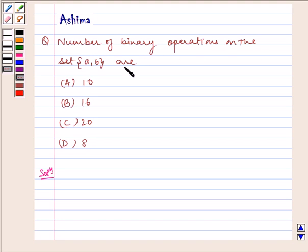The number of binary operations on the set A, B are: A) 10, B) 16, C) 20, D) 8.